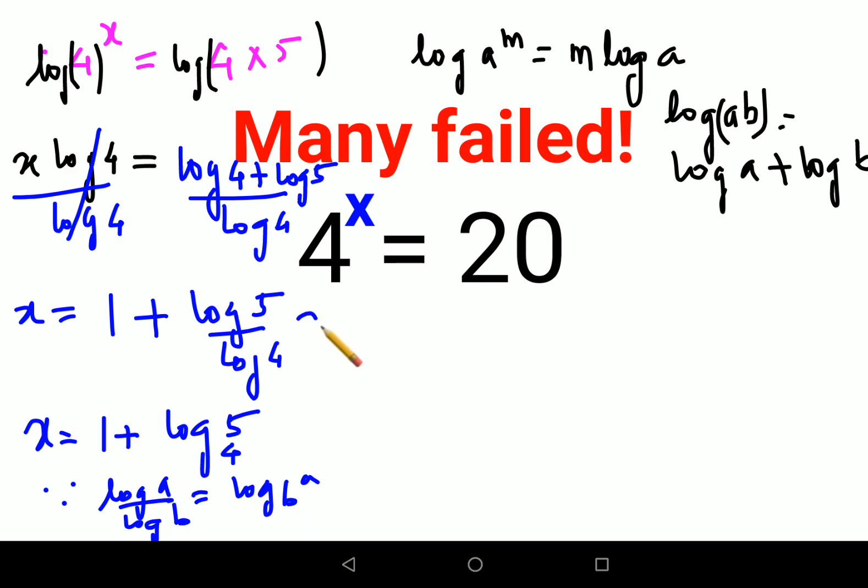So these are the two values which can work, but if they had given you the value or the log table, then you could put the value of this fraction. So here what could have happened in this case is x equals 1 plus 0.699 upon log 4, the value is 0.602.